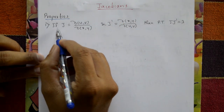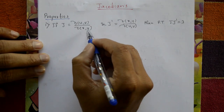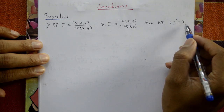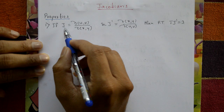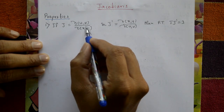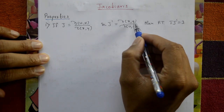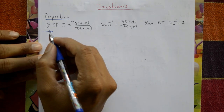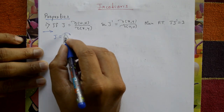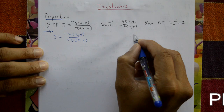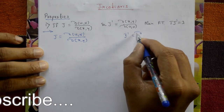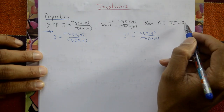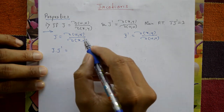Jacobian properties: first, if J is equal to ∂(u,v)/∂(x,y) and J' is equal to ∂(x,y)/∂(u,v), then prove that J × J' = 1. Here, u and v are functions of two independent variables x and y, and x and y are functions of two independent variables u and v.